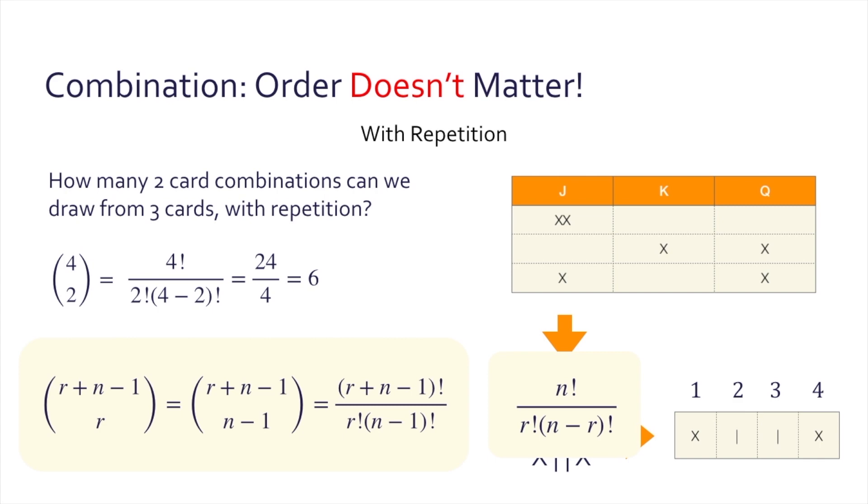So for example, in the case of our problem, we have two cards per combination, so r equals two. The n equals three, and there are two dividers separating the three categories, so n minus one equals two.